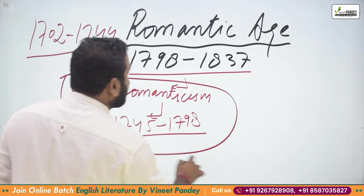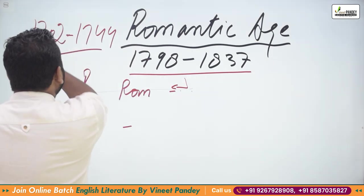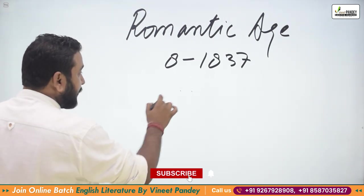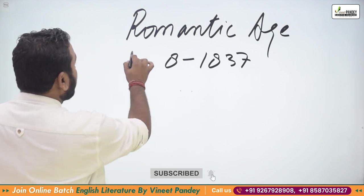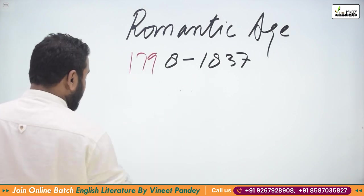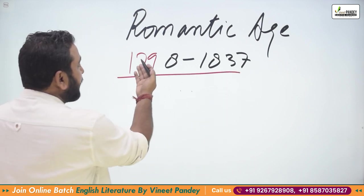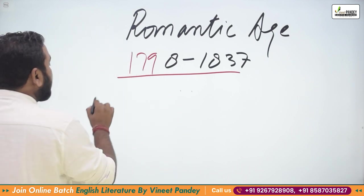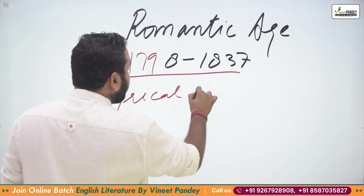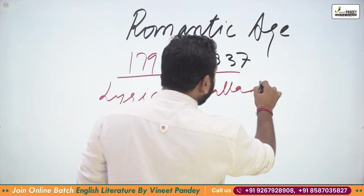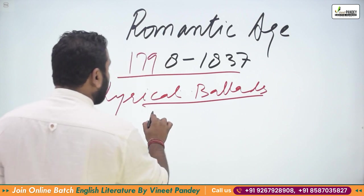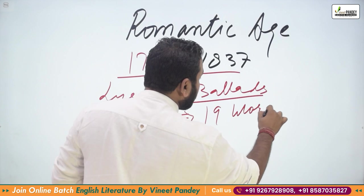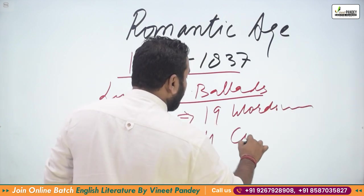To understand the Romantic Age, here are some key points. The Romantic Age begins in 1798 with the publication of Lyrical Ballads — a collection of 23 poems, 19 by Wordsworth and 4 by Coleridge.